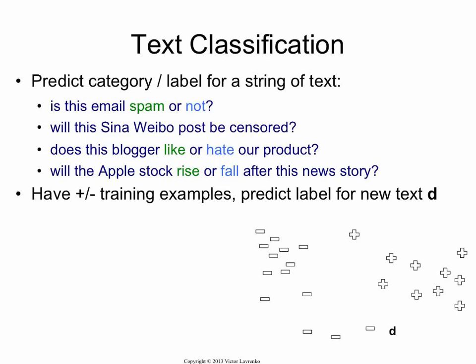You take your training examples, learn some kind of decision boundary, and predict the class for a new document D. We've actually already seen one method for doing this — when we talked about relevance feedback, where the user says these documents are relevant and those are non-relevant. We had Rocchio's algorithm for that.